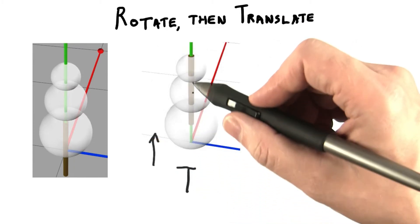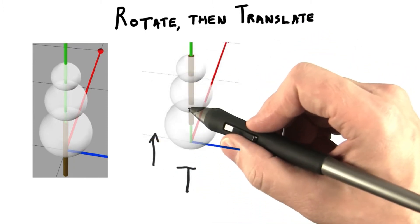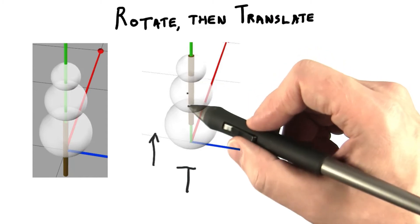First we move the stick upwards 50 units. The center of the stick is now in place in the middle of the body. So far, so good.